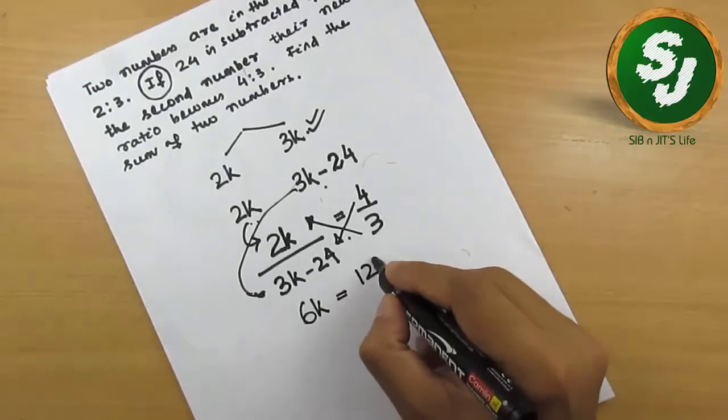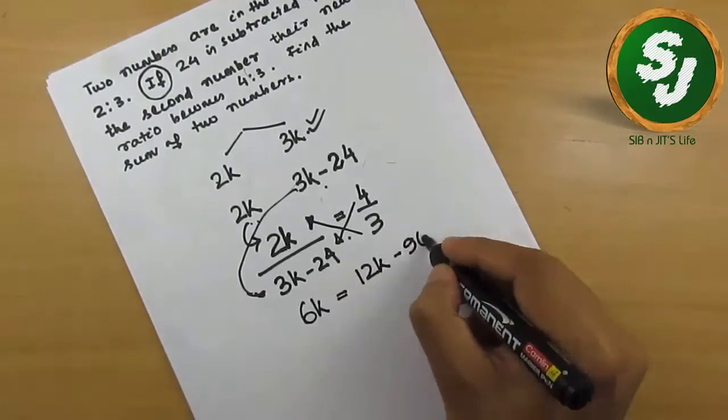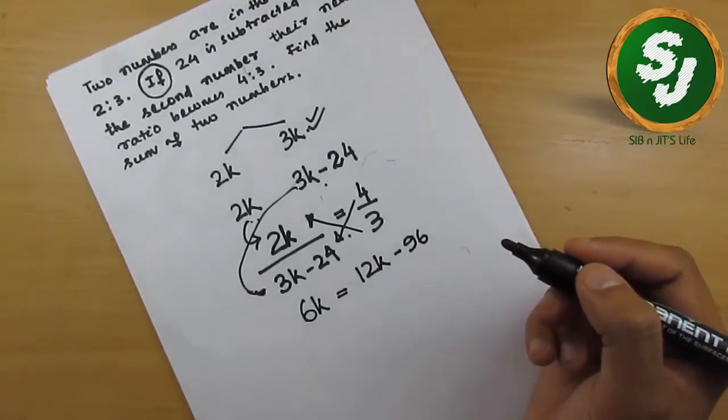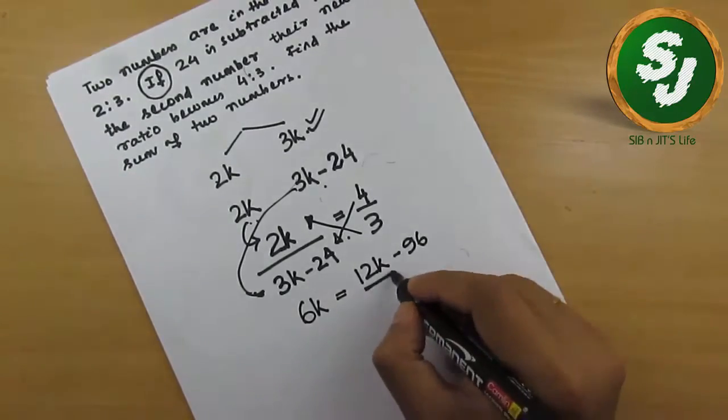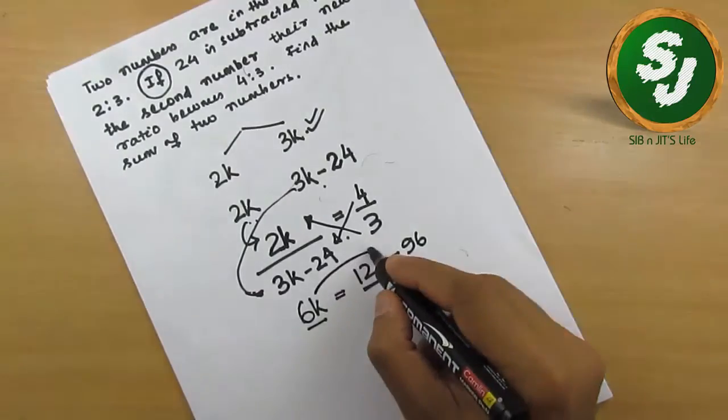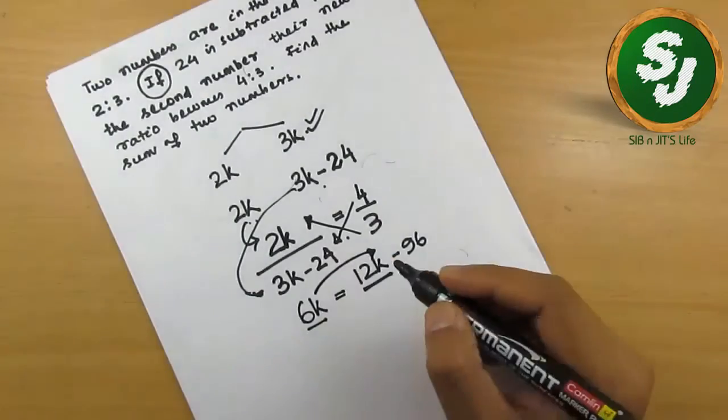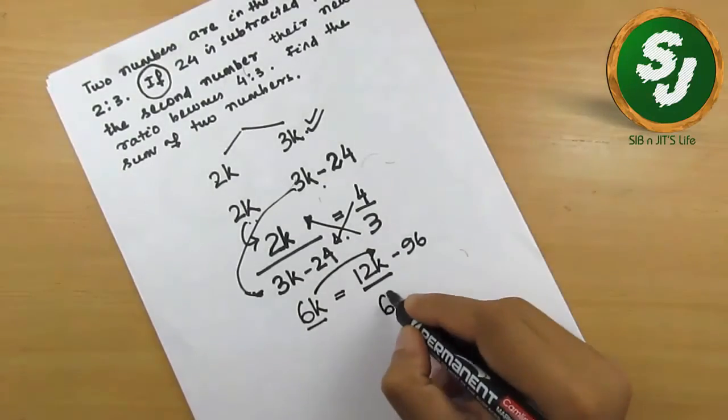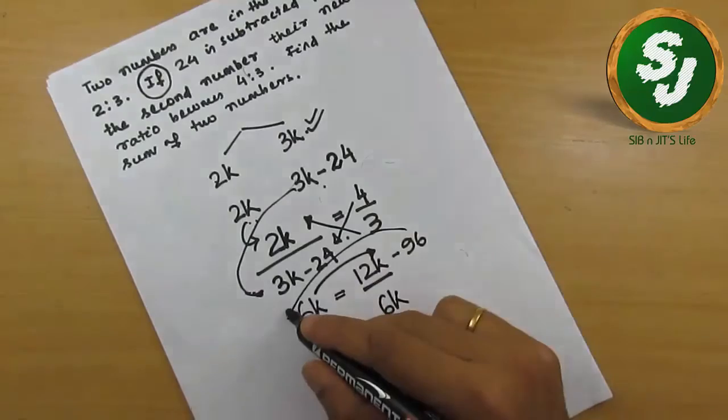it would be 12k minus 96. So keep the elements which are having k on one side and a pure number on the other side. So let's take 6k to here and it becomes subtracted and it becomes minus 12k minus 6k. This is 6k. 96 goes to this side